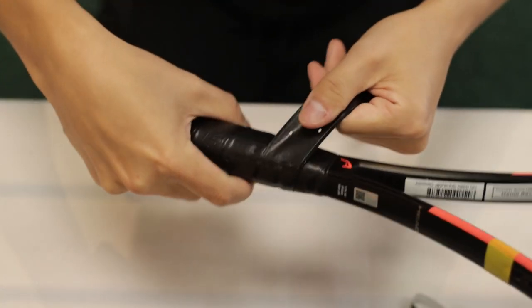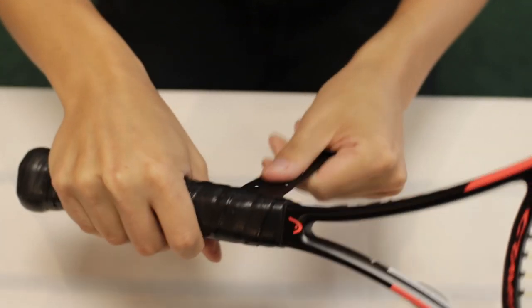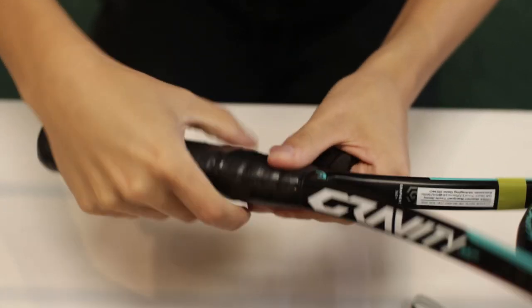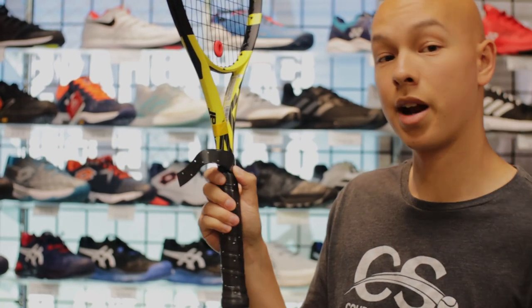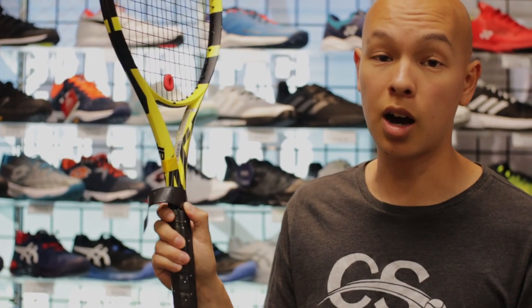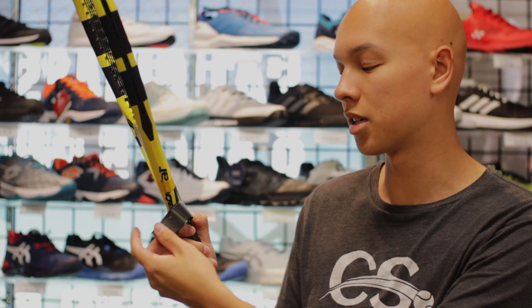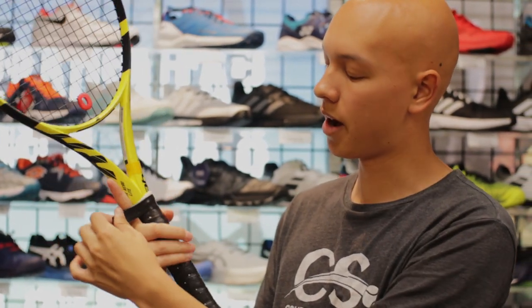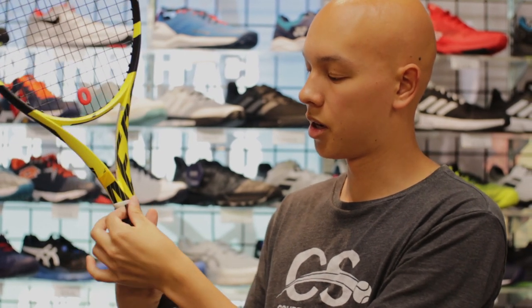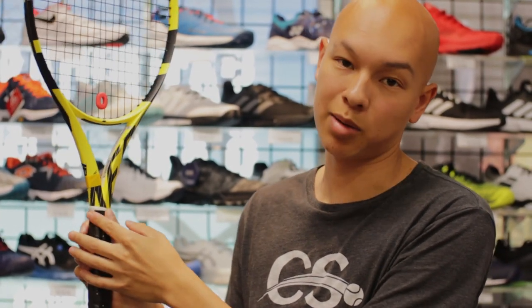Alright so when you get to the top of the grip you have a lot of excess grip and now there are a couple options. If you're on court and you don't have access to scissors, what you can do is just fold it across like that, wrap it around, and tape it up. Not the prettiest but it does in a pinch.